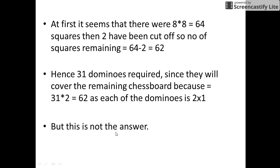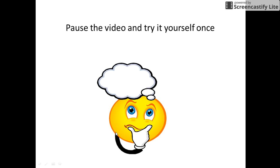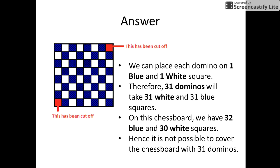But this is not the answer. Look at the cut pieces carefully. We can place each domino on 1 blue and 1 white square. Therefore, 31 dominoes will take 31 white and 31 blue squares.